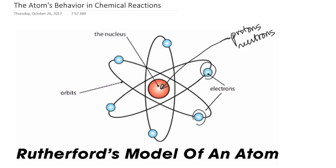When atoms interact to form compounds, it would be extremely unlikely for the protons and neutrons to get involved in that process, since they're tucked away inside the nucleus. Outside the nucleus, electrons are swirling around, so it's much more likely that electrons are involved in chemical reactions — and indeed that turns out to be the case.